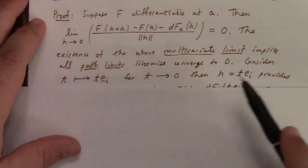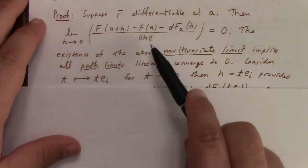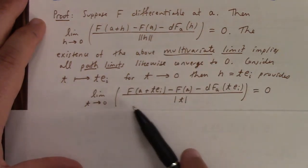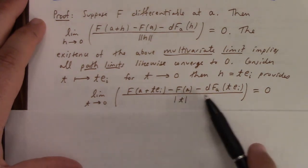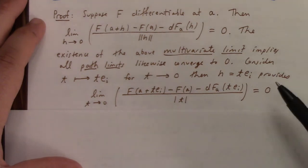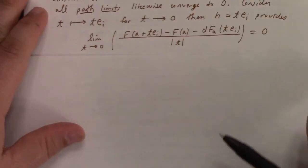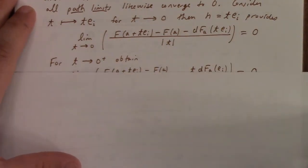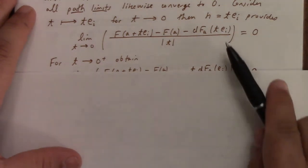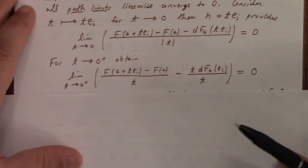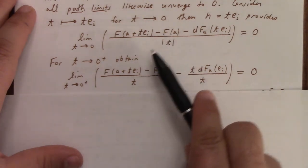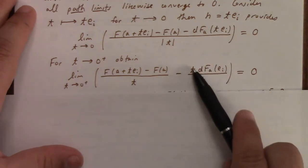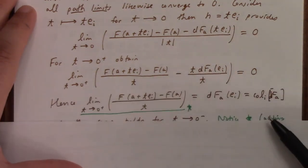T goes to te_i. Then, if we set h equal to te_i in the above, then we get the limit as t goes to zero of the absolute value of t of this stuff right here, right? But then, from t positive, you can drop the absolute value, and you just got the difference quotient F(a + te_i) - F(a) over t, and the t pulls out, and these t's cancel, right?